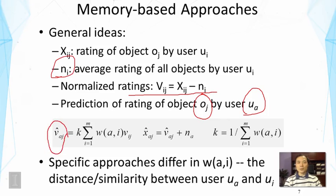Mathematically, the predicted rating of user a on object oj is basically a combination of the normalized ratings of different users. We take a sum over all the users, but not all users contribute equally to the average—this is controlled by the weights.